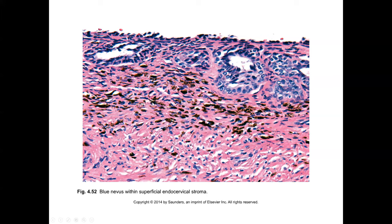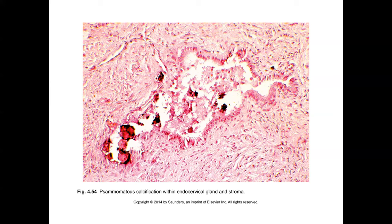Pigmented lesions and nevi are not unheard of in the cervix but are decidedly rare — so if you see pigmentation it's not always iron or cautery-related, and may appear clinically as a dark spot that gets biopsied. Psammomatous-type calcifications occasionally also occur in the cervix, not necessarily a feature of serous carcinoma or other malignancy, but related to papillarity and loss of vascularity to that area. That covers the landscape of things discussed today.